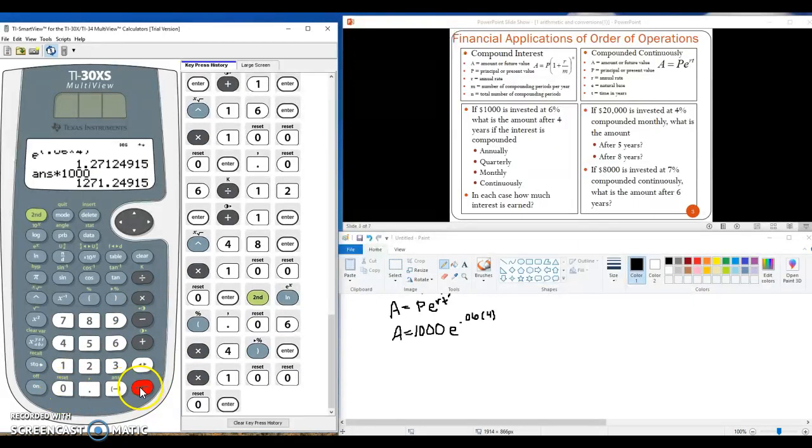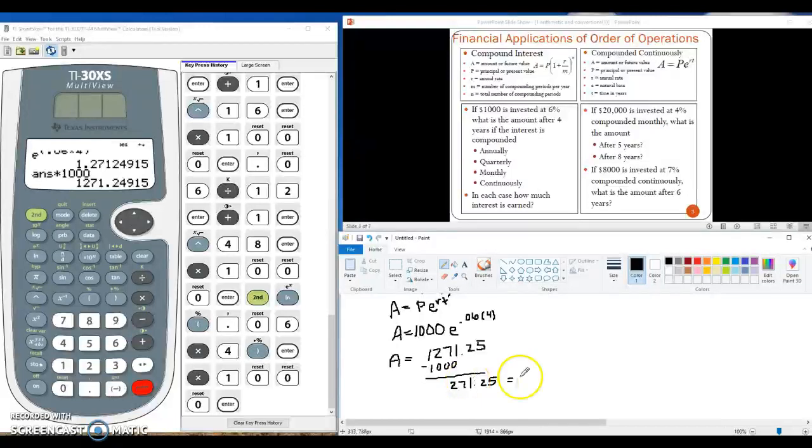Hit enter. And we find that the amount is $1,271.25. And if we subtract, we can see $271.25 of that is the interest. And that would be the maximum amount of interest that we would possibly be able to earn.